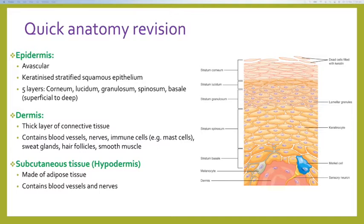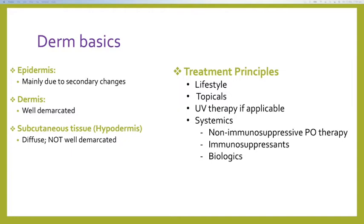A quick anatomy revision. The skin has three main parts: the top layer is the epidermis, the second layer is the dermis, and the bottom layer is the fatty layer. This is important because the way conditions present depends on where they're originating from. From the epidermis, it's mainly presenting secondary changes — things like scars, atrophy, erosions, and scales. In the dermis, it presents as primary changes, typically well-demarcated — you can definitely draw a line from affected to normal skin. Subcutaneous tissue presents diffusely, not well demarcated, such as urticaria.